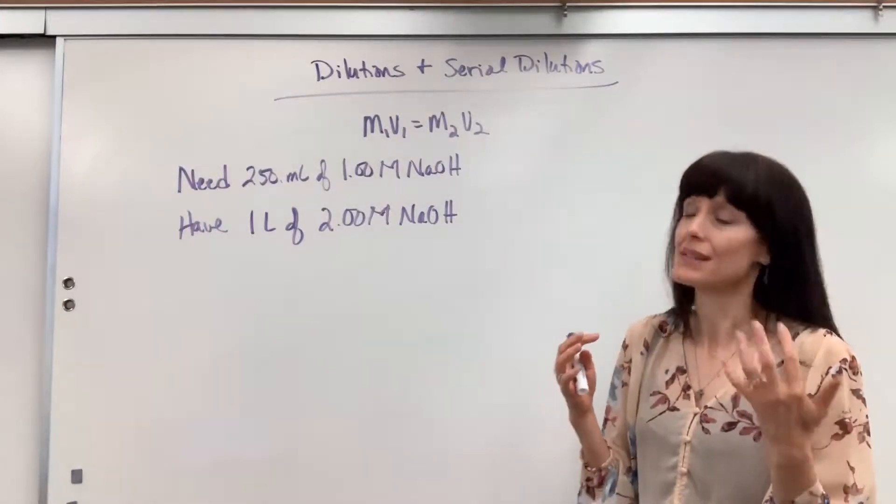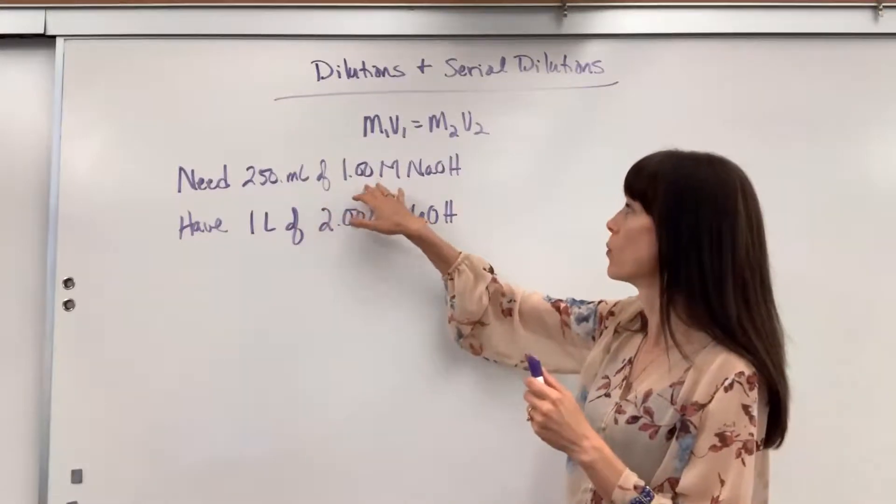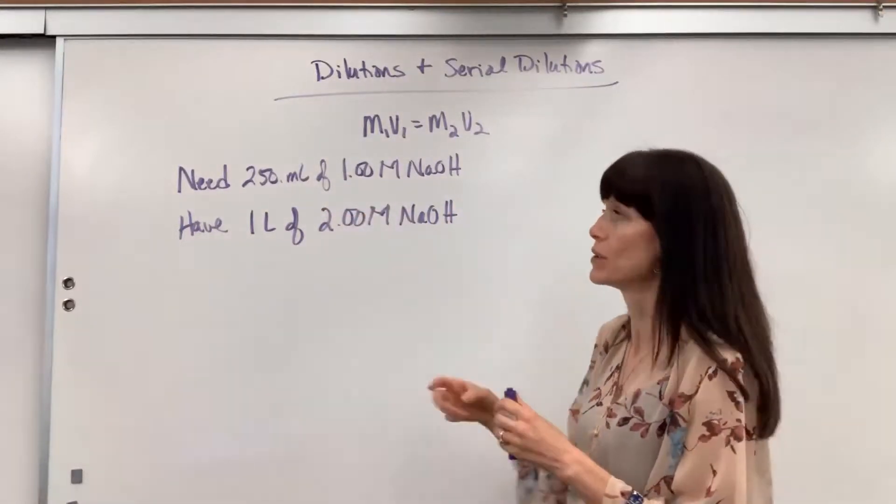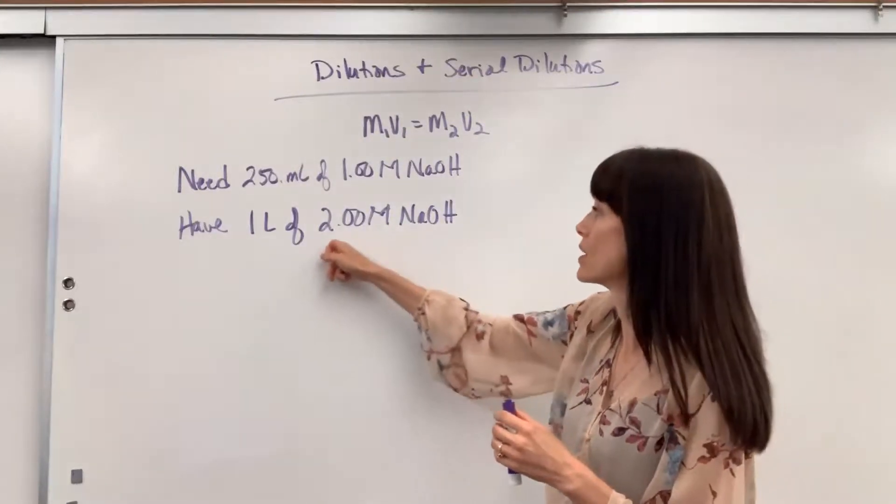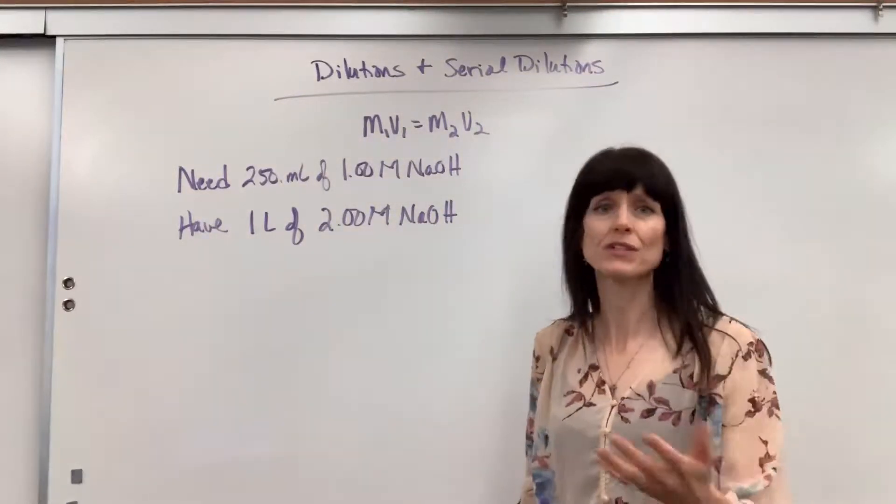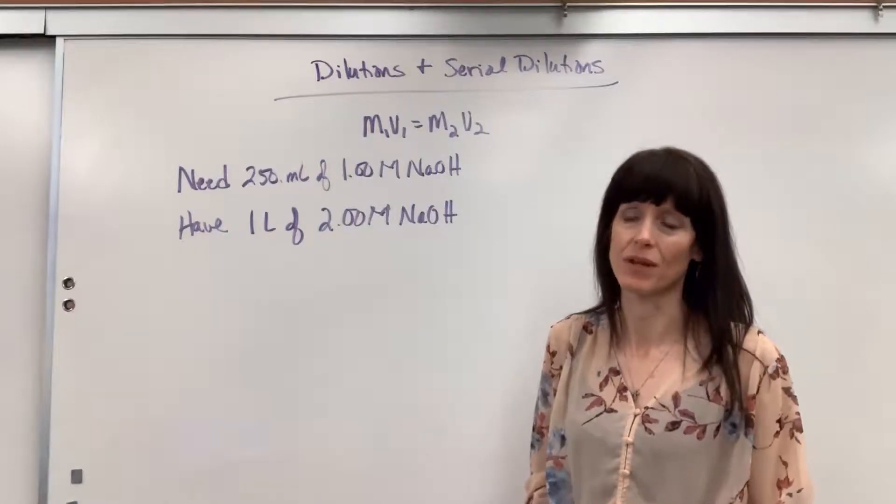Here's your example. We need 250 mils of 1.0 M NaOH, but you're given one liter of 2.0 M. This is a larger concentration. There's a formula for this, and I recommend you memorize this formula.